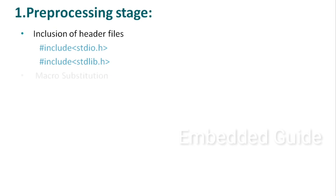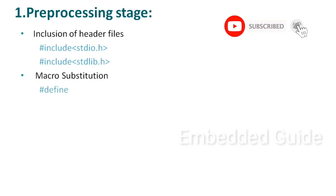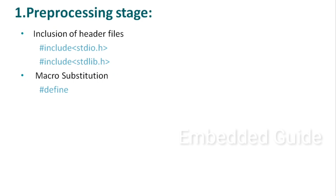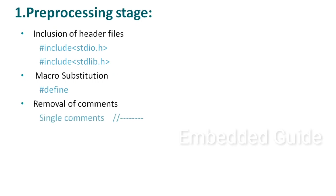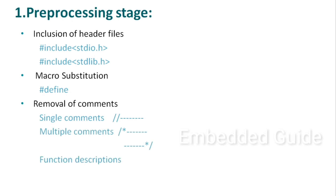The next pre-processing task is macro substitution — if you define macros using #define, they are substituted during pre-processing. Additionally, comments are removed in this stage. We typically use single-line and multi-line comments for function descriptions, and all of these are stripped out during pre-processing.